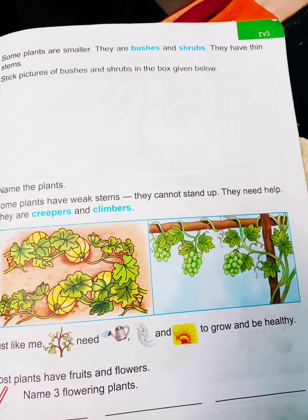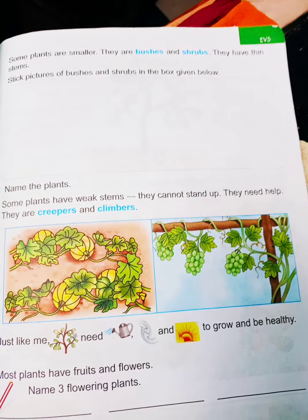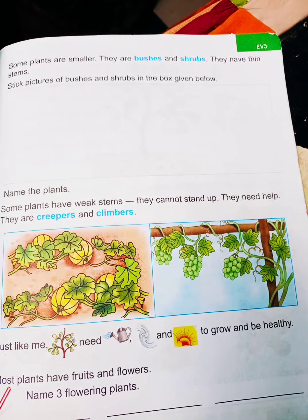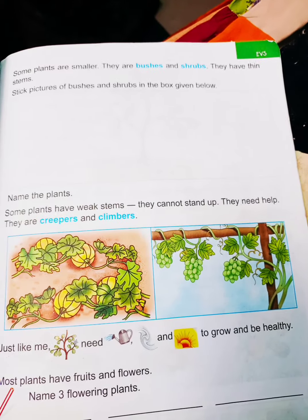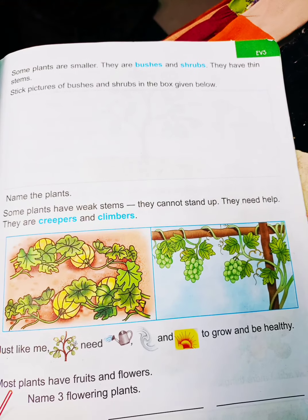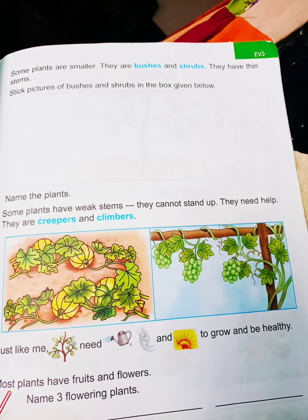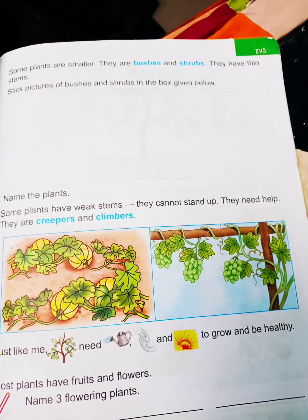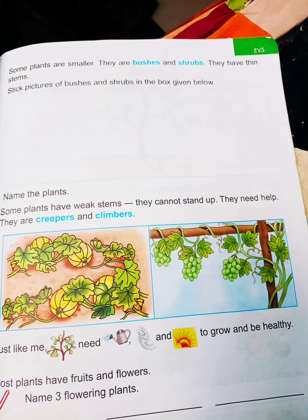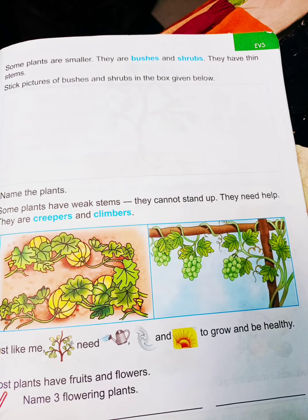Herbs, such as mint and grass, will be studied more in the next year's class. Now, what are creepers and climbers? Creepers are plants that are weak and cannot stand straight on their own, so they need support to grow.